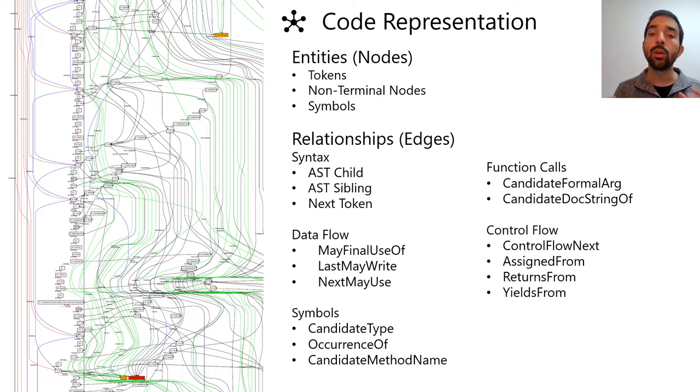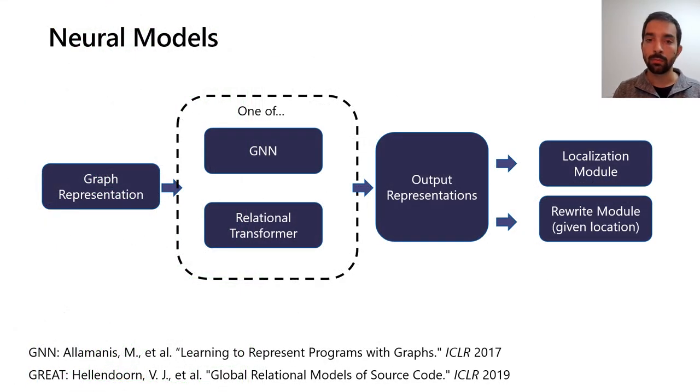Finally, we're going to represent these graphs with either graph neural networks, GNNs, or relational transformers. As I mentioned before, the detector and selector are symmetric models. We use the following neural architecture for each one of them.